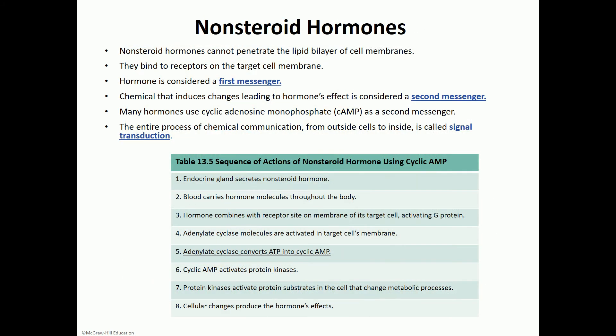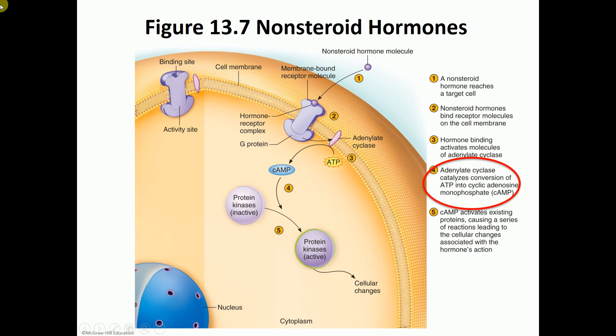Non-steroid hormones are mainly made out of amino acids or proteins, so they are water-soluble and do not need a protein carrier. Their receptors are found on the surface of the target cell — surface receptors — and the hormone attaches to that surface receptor on the cell membrane.